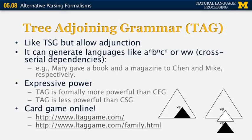What is adjunction? Suppose you have a parse tree with a verb phrase embedded inside it. The adjunction operator allows you to create a new node, put it inside the tree, and push the existing subtree further down. So you have a new verb phrase that gets the original verb phrase as one of its descendants — an operation that cannot be modeled in context-free grammars.